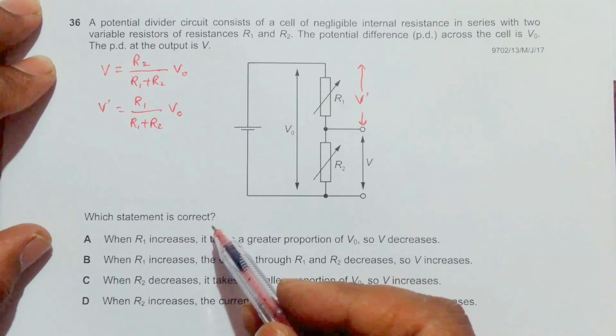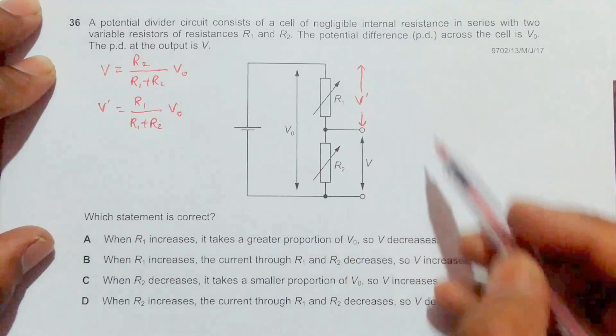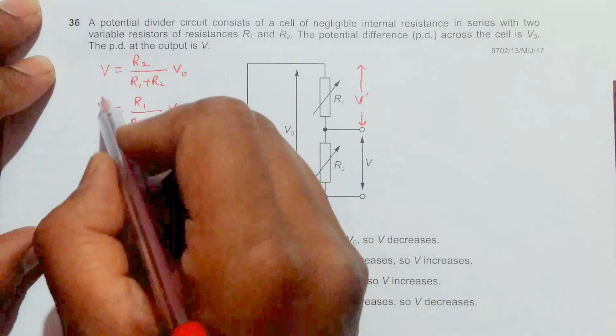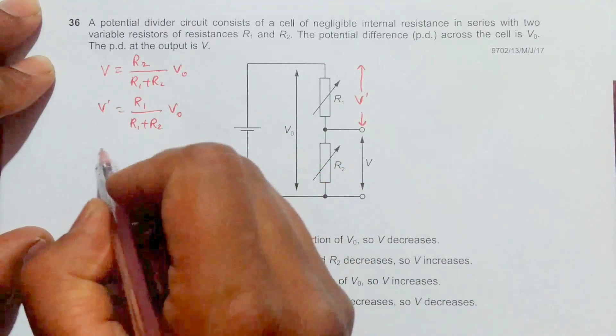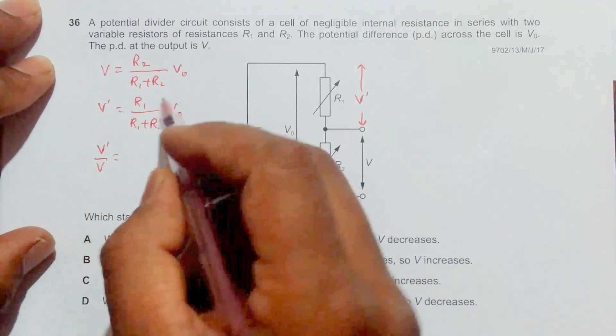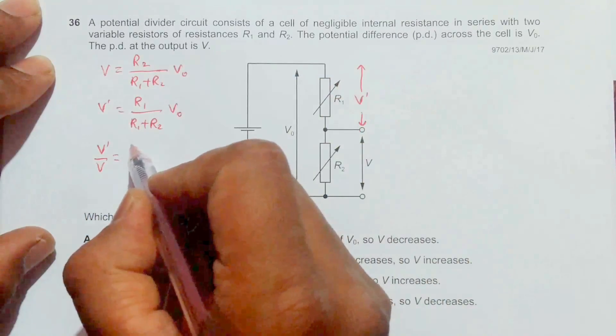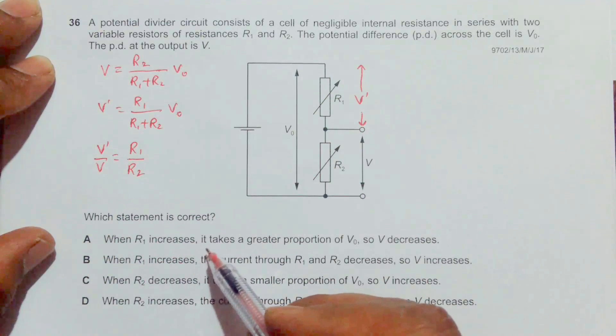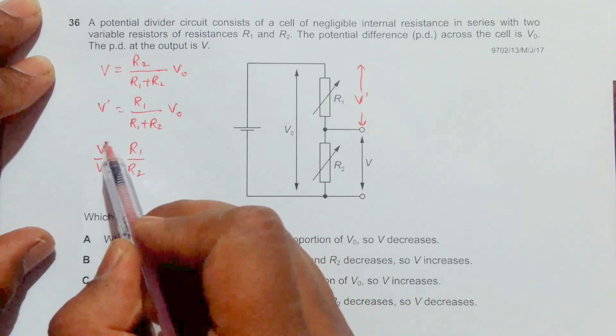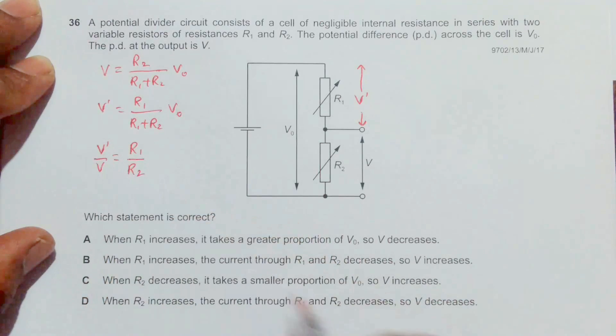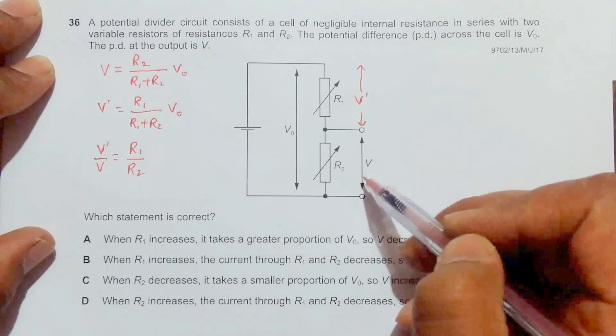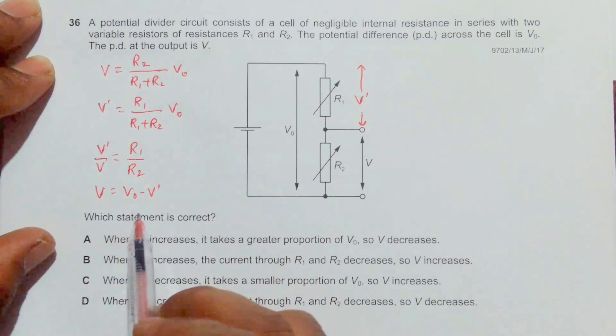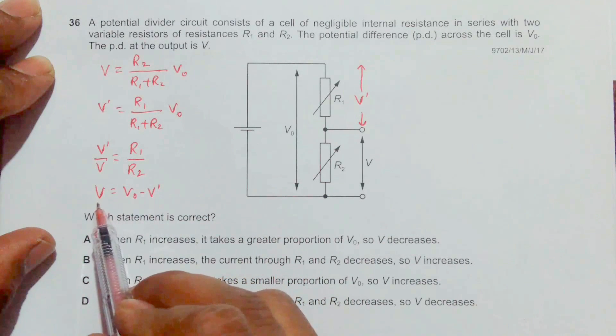Let's evaluate each statement. Choice A states when R1 increases, it takes a greater proportion of V naught, so V decreases. Taking the ratio V prime by V equals R1 by R2. When R1 increases, V prime increases, and since V equals V naught minus V prime, V should decrease. So choice A seems correct.